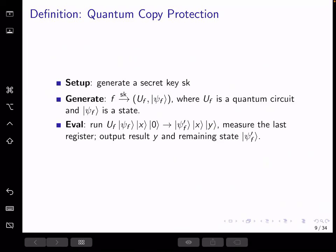Here, notice that we also separate setup and generation procedures because we want to specify that secret key generation is usually independent of the function. The eval algorithm takes in the quantum program and the input. It outputs the measurement result of the output register and the remaining state after evaluation.